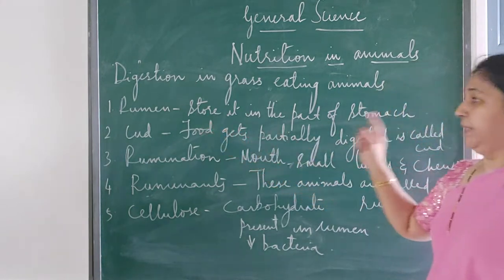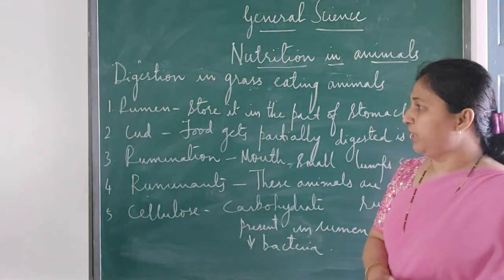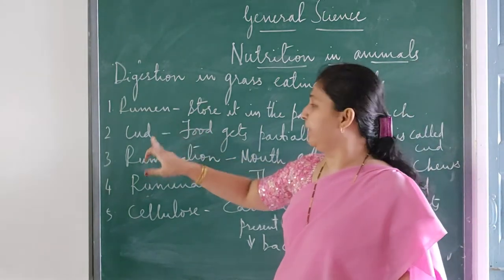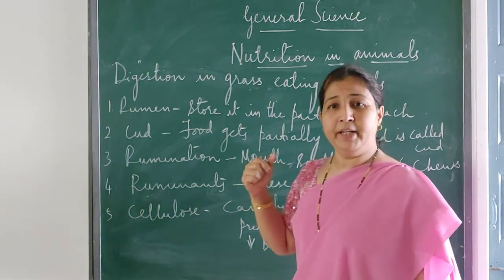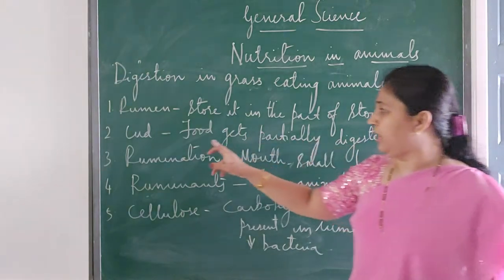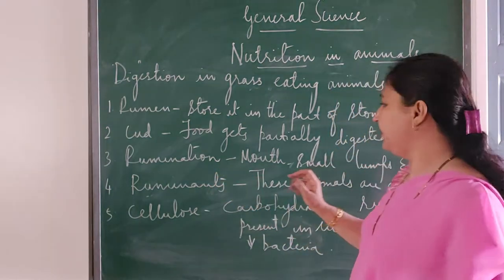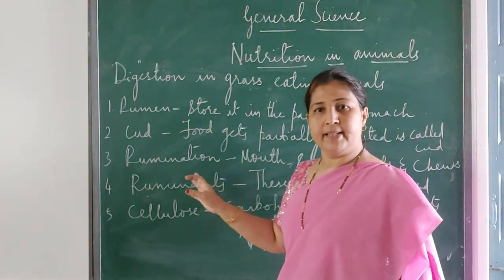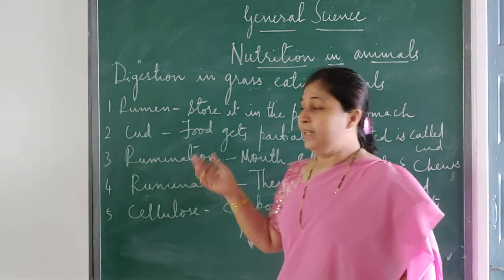What is rumen? The animals store whatever grass they eat in their stomach — that part is called the rumen. What is rumination? Rumination means the food they eat from the mouth goes in, forms small lumps, and they keep chewing it — that is called rumination. These animals store their food and eat whenever they are free.